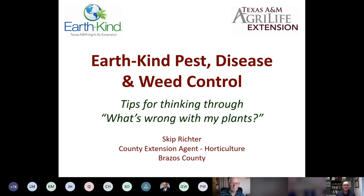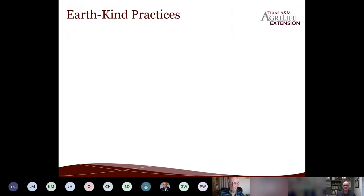What I'd like to focus on today are some tips for thinking through what's wrong with your plant. When you go out and look at a plant and it's got something eaten away, spots on the leaves, wilting, or any of those things — how do we think about that? It's one thing to memorize what black spot of roses looks like, but if you'd never heard of black spot and saw something on the leaves, how would you process what might have caused it?